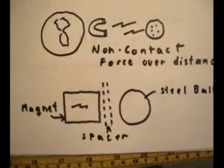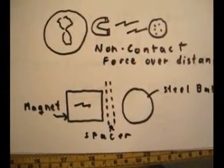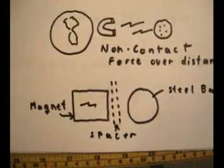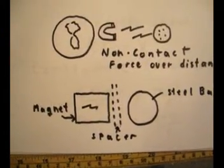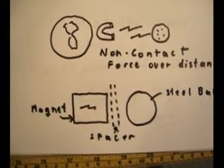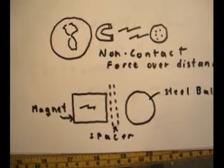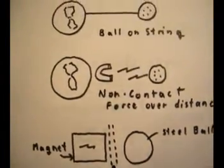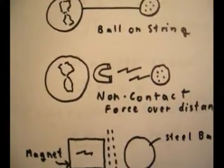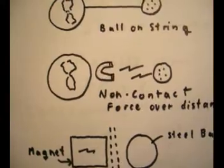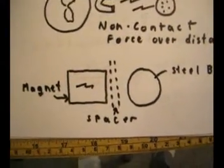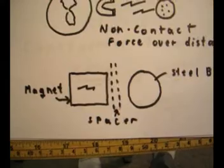I used that to attract a steel ball. And I put a small spacer in between the magnet and the steel ball to ensure that this is a non-contact force. So nothing is actually physically holding the ball onto the magnet. Only the attractive force of magnetism, which is a force similar in nature to the non-contact force of gravity. So this would be a very similar kind of attraction.